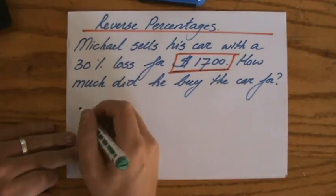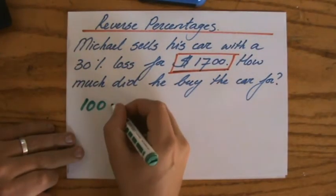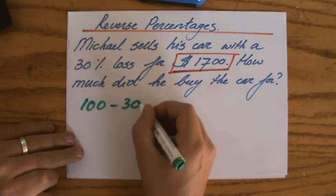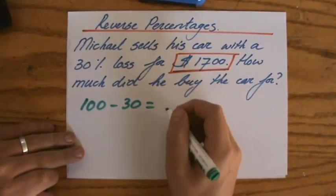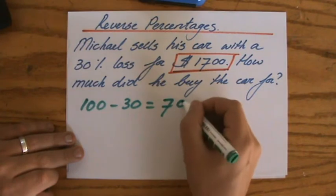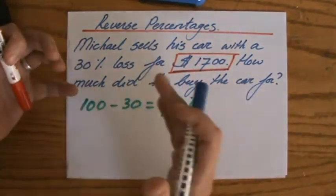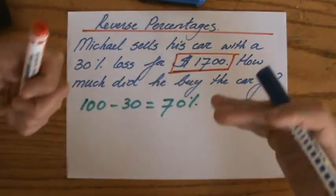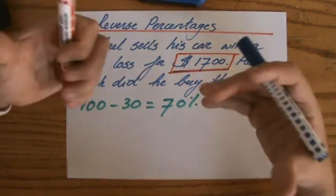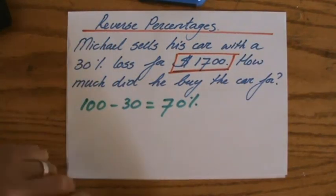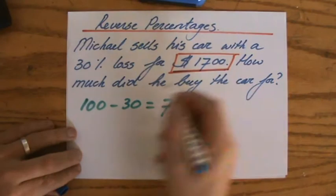Considering he loses 30%, $1700 is actually 70% of the original price. I'm sure you understand that 100 minus 30 is 70 percent. The difficult thing is to identify reverse percentages, because then it's quite straightforward.